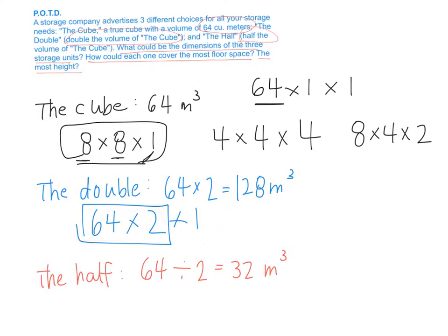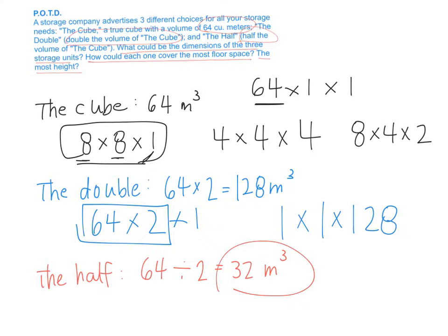What's the tallest the double could possibly be? Could it be taller than 128 meters? If my height is 128 meters, what would my length have to be? One. And what would my width have to be? One. Following that same logic, what area of the base do I need to make the biggest area for the half? I need the area to be 32 square meters. One way: 8 times 4 times 1.